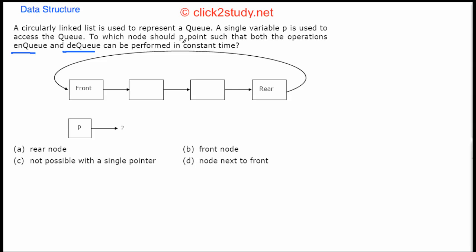These operations need to be done in constant time. The choices are: should P point to the rear node, the front node, or the node next to the front? Or is it not even possible to do enqueue and dequeue in constant time with a single pointer?